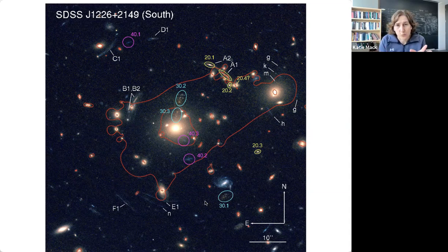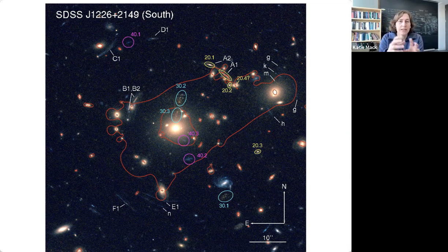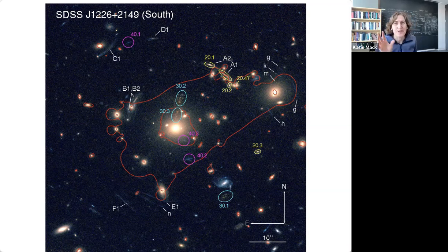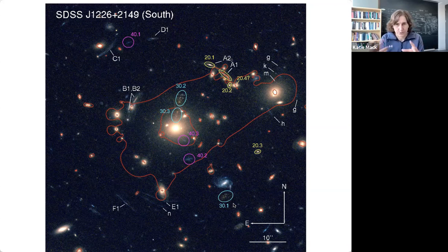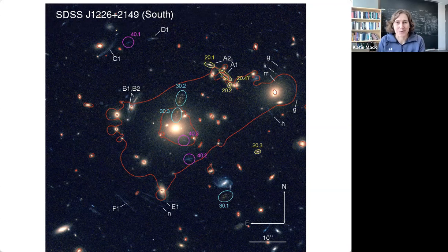It's a way of mapping out where you expect to see those multiple images as the light is distorted and comes from different paths going through this very distorted space. You can see the same galaxy two or three times because the light is getting distorted as it's going through that massive region. The distortion can give you multiple images of the same galaxy. What they've done here is modeled it all out and labeled galaxies where you get more than one image — for example, 30.1, 30.2, 30.3 are all images of the same galaxy, but they've been distorted because they're going through this very distorted space.